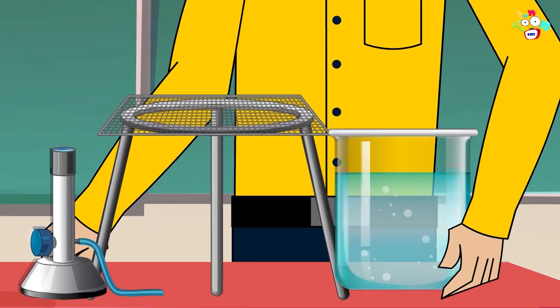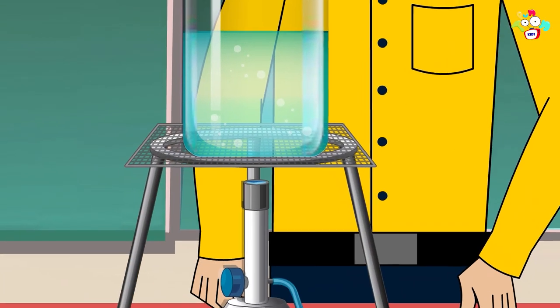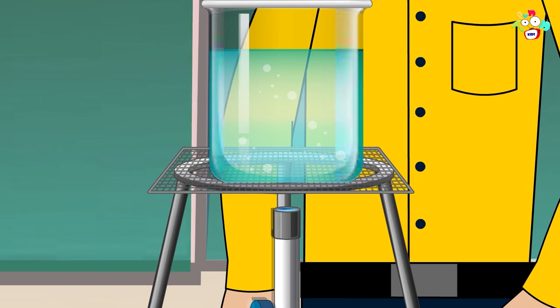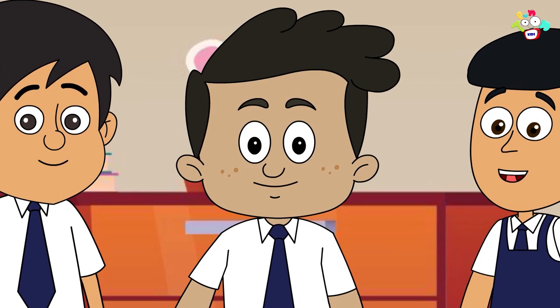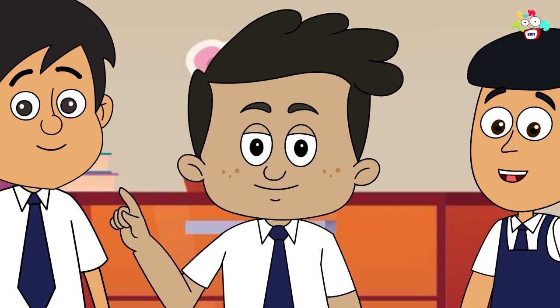Teacher explains how to set up the tripod stand. All the kids also tried to set it up. Then Bunty said, What are those colorful tubes, sir?